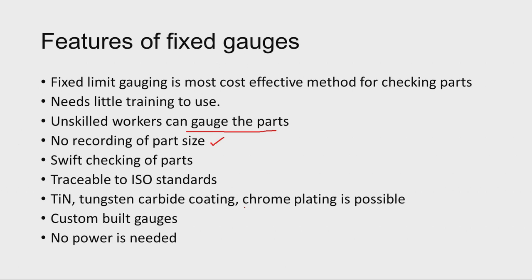Quick checking of parts is possible, and all gauges are traceable to ISO standards. Different kinds of coating are possible to enhance the service life of the gauges. Custom-built gauges can be made depending upon the requirement of the user. An important advantage is that no external power is needed — only man power — except air gauges, where pneumatic air supply is required.